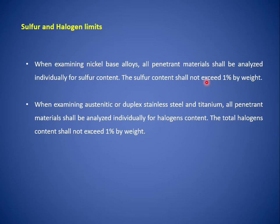When examining austenitic or duplex stainless steels, all penetrant materials shall be analyzed individually for halogens content. The total halogens content shall not exceed 1% by weight. So for nickel and nickel-based alloys, the sulfur content shall not exceed 1% of the weight. For austenitic stainless steels, duplex stainless steels, or titanium materials, the chlorine content and other halogens must be within limits.